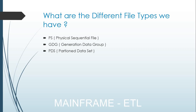We also have a VSAM file where data can reside. Apart from PS, GDG, and VSAM, we have a database called DB2, which is an external system we connect to from the mainframe to access data. That's a secondary concern. The primary focus here is the physical sequential file and the GDG file. VSAM we can cover later.